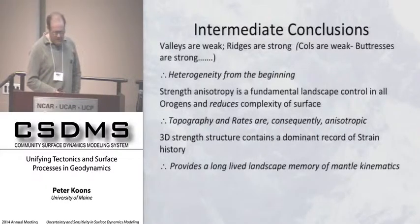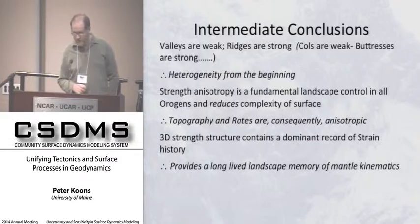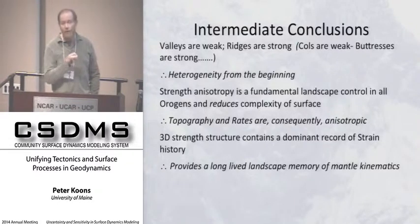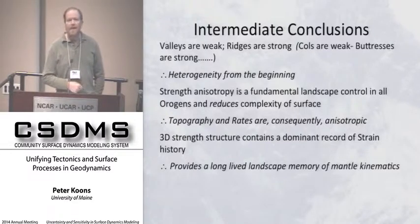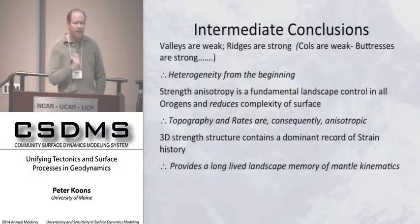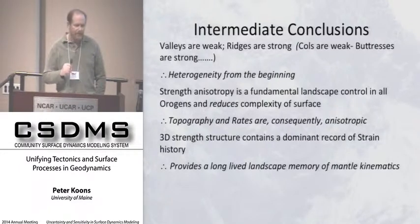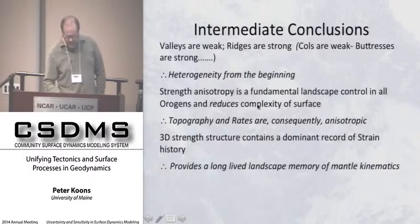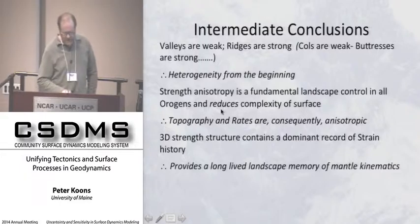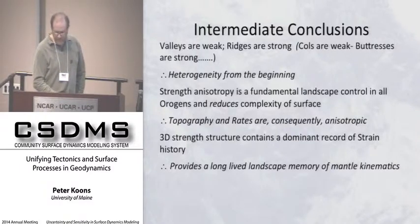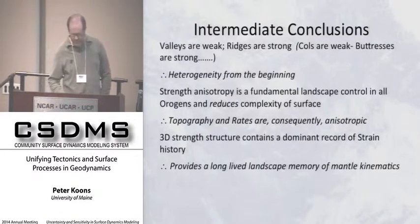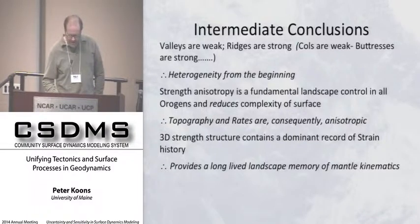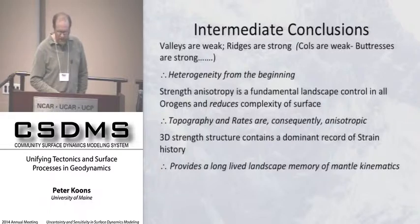The intermediate conclusions about strength-strain relationships: first, valleys are weak and heterogeneity starts from the very beginning — as soon as an orogen begins to form, heterogeneity is there. From a modeling perspective, almost all of us assume homogeneity to begin with, and it's a bad assumption. We will still do it because it gets us started, but it almost always gives us incorrect intuition. The strength of anisotropy is a basic control in all orogens and it reduces the complexity of the surface. The 3D history is a permanent memory in the topography.